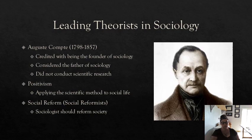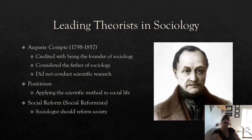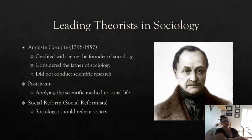The first theorist we're talking about today is Auguste Comte. He's credited with being the founder, or father, of sociology because he was a positivist who came up with the idea of applying the scientific method to social life. However, he then did what we call armchair theory — he came up with his own theories and ideas but never conducted research. We don't really use his theories today because they didn't stand the test of time. He was also what we call a social reformist — someone who believes we should use sociology to help change and improve society as a whole.